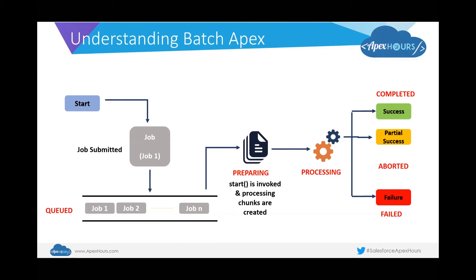Similarly, if you have a really high volume of records to process, having a batch size of one not only takes a really long time but setting it to 2,000 ensures more records are picked up in each batch, meaning comparatively less time is taken to complete the batch job execution. This is how batch size can affect the overall processing and performance of a batch Apex job.